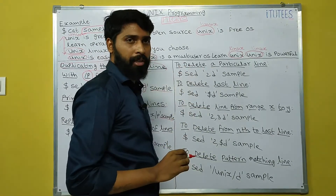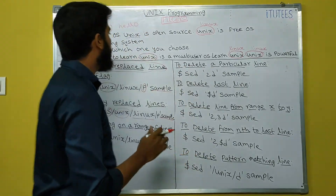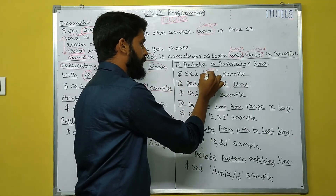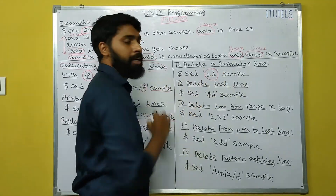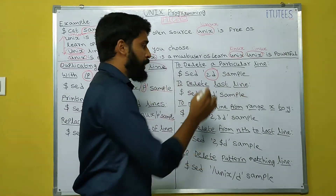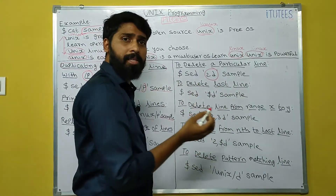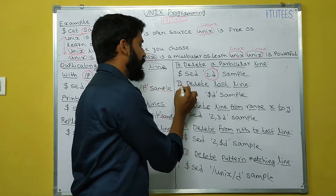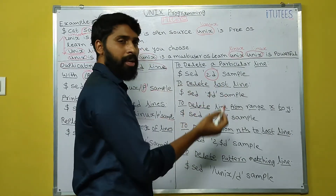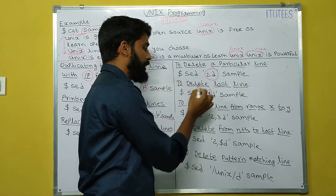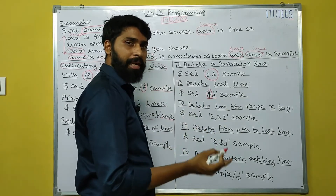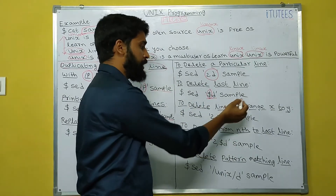To delete a particular line: to delete the second line, use: SED '2d' sample. 'D' means delete and '2' specifies the second line. To delete the last line, use: SED '$d' sample — the dollar sign '$' refers to the last line.